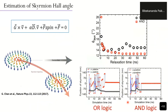To understand skyrmion trajectory under driving current and stability over time, the skyrmion Hall angle was estimated. Under driving current, the topological spin texture causes the skyrmion to deflect from its path, moving in a curved trajectory and making an angle with respect to the electron flow — called the skyrmion Hall angle, understood from the Thiele equation. The calculated skyrmion Hall angle for both OR and AND logic drastically reduces and stabilizes over time. The trajectory analysis shows that after 13 nanoseconds the skyrmion becomes stable, confirming stability in the device architecture.